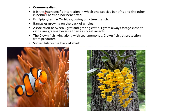Commensalism is an interspecific interaction in which one species gets benefited and the other is neither harmed nor benefited. For example, epiphytes such as orchids growing on tree bark — the orchid gets benefited but the tree is neither harmed nor benefited. Another example is clownfish living among sea anemones — the clownfish gets protection from predators. Also, suckerfish on the back of sharks is an example of commensalism.